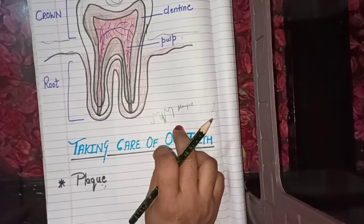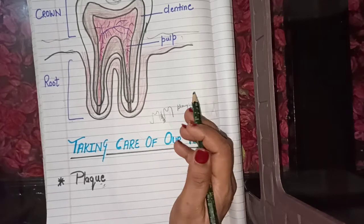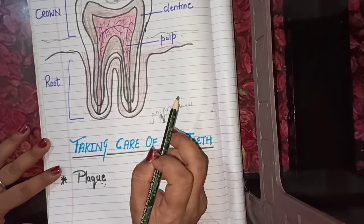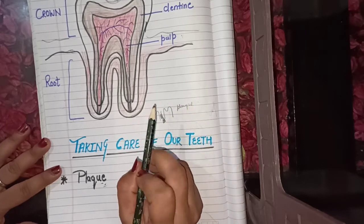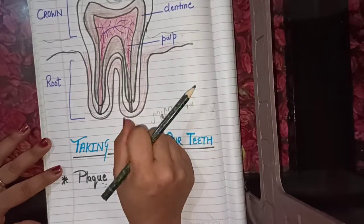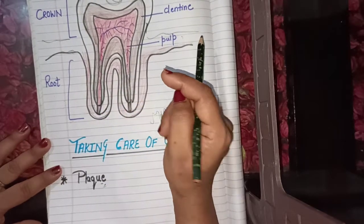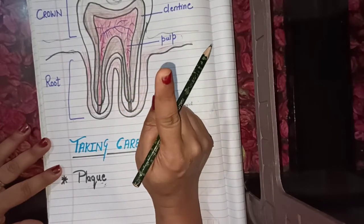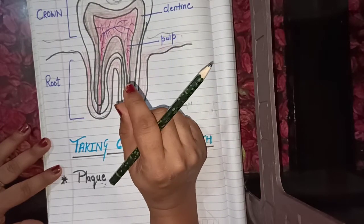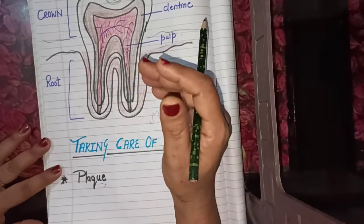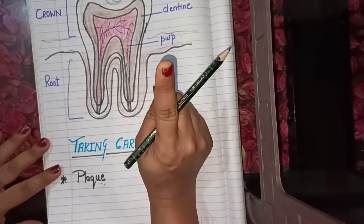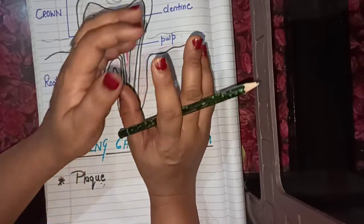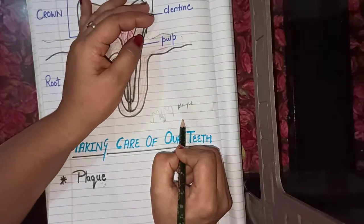What should we do to stay away from these types of tooth disease? We should brush our teeth at least twice a day. It is important to brush properly. Be sure your toothbrush has soft bristles. Change your toothbrush after every three months. Please follow these healthy habits to stay away from tooth disease.